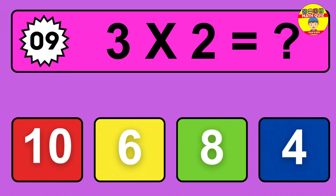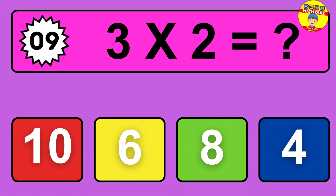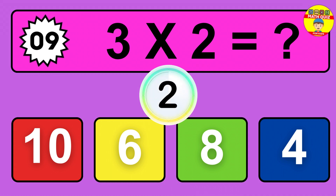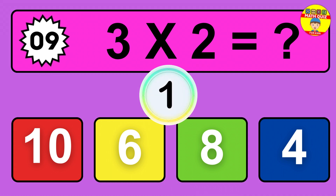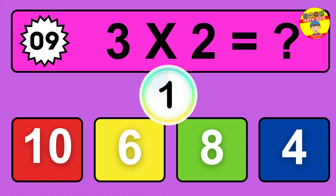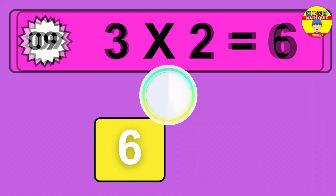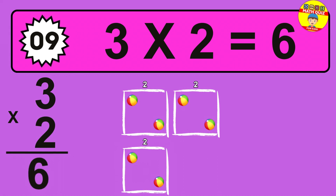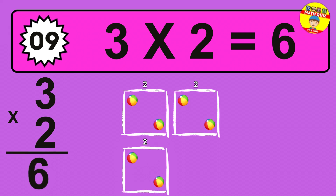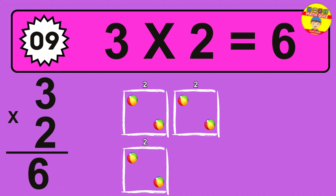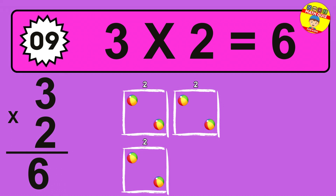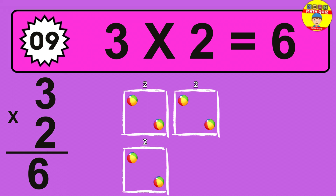Question 9. 3 times 2 equals what? The answer is 3 times 2 is 6. To calculate, we have 3 groups with 2 balls each one. So how many balls do we have? 6 balls.